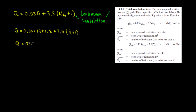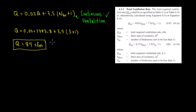We're going to get a total of 84 CFM. So by code, for that dwelling unit, you require at least 84 CFM of continuous ventilation.